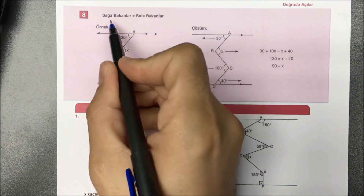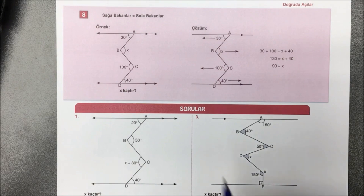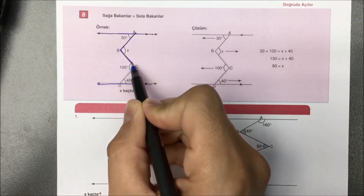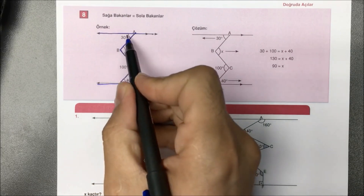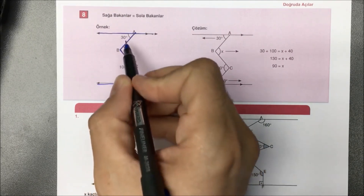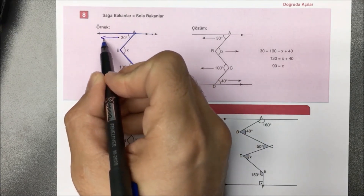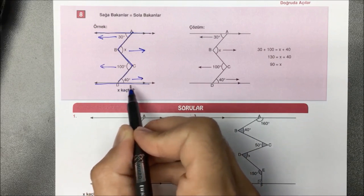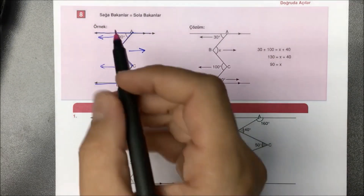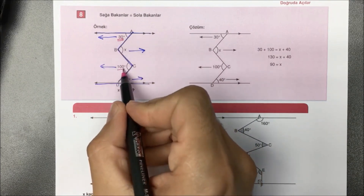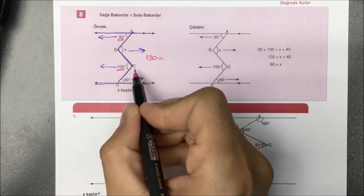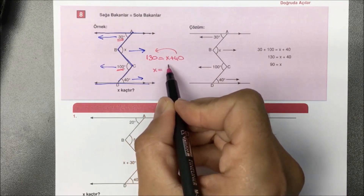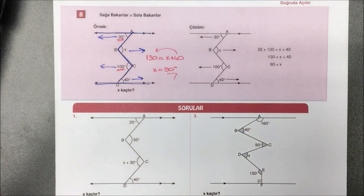Sekizinci türümüzdeyiz: sağa bakanlar eşittir sola bakanlar. M kuralının biraz daha genişletilmiş halidir. Paralelliklerin içerisinde zikzak kırıklı çizgi görüyorsunuz. Şu ilk başlayacağınız açı geniş açı olamaz. 30 nereye bakıyor? Sola. Sonraki açının mecburen sağa bakması lazım; sola; sağa. Ne zamanki duvara geldiğinizde süreç bitmiş oluyor. Sol tarafa doğru çizdiğimiz okların toplamları yani 30 ile 100'ün toplamı 130, sağ tarafa doğru çizdiğimiz okların toplamları da X artı 40 olacak. 40'ı karşı tarafa atacak olursak X buradan 90 derece olarak bulunmuş olur.